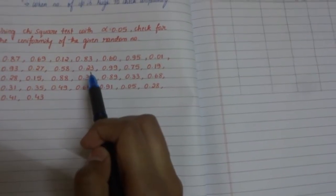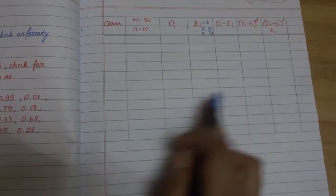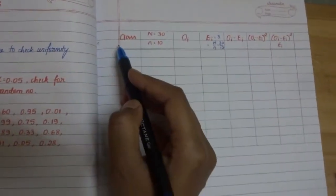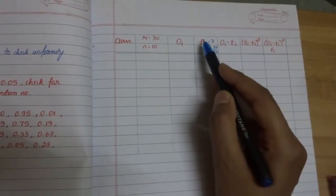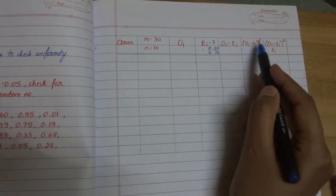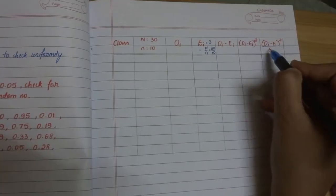So these are the numbers which are given here. The important part of this solution is the table, which has these columns: class n, oi, ei, oi minus ei, oi minus ei the whole square, and the last one is oi minus ei the whole square divided by ei.